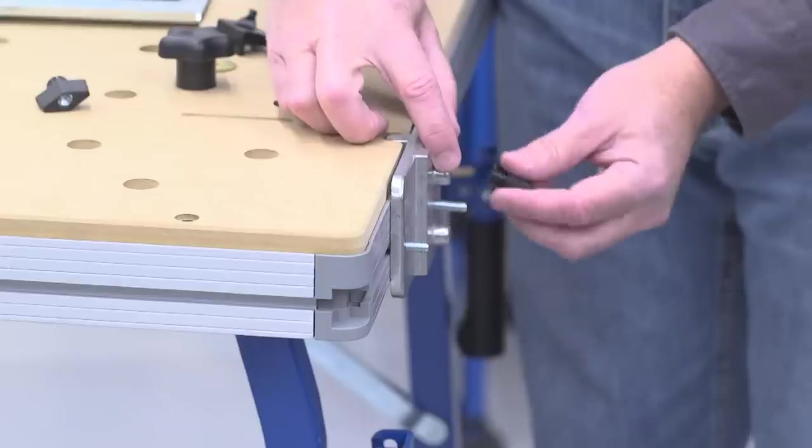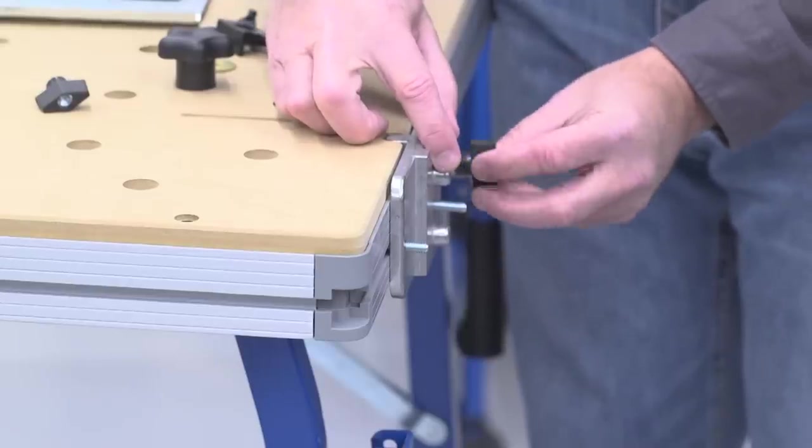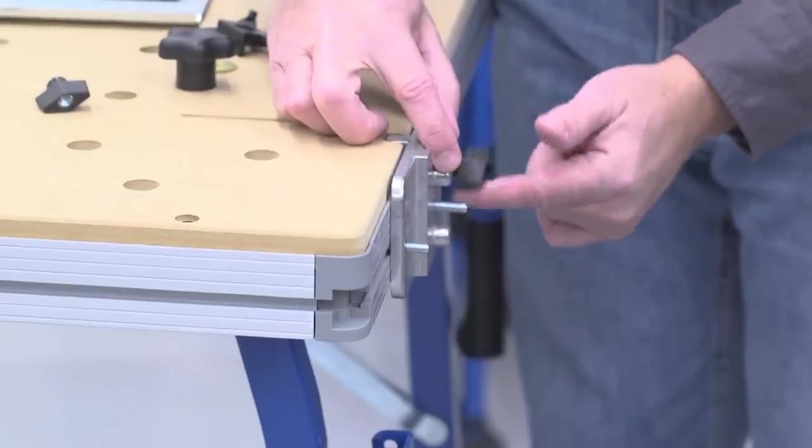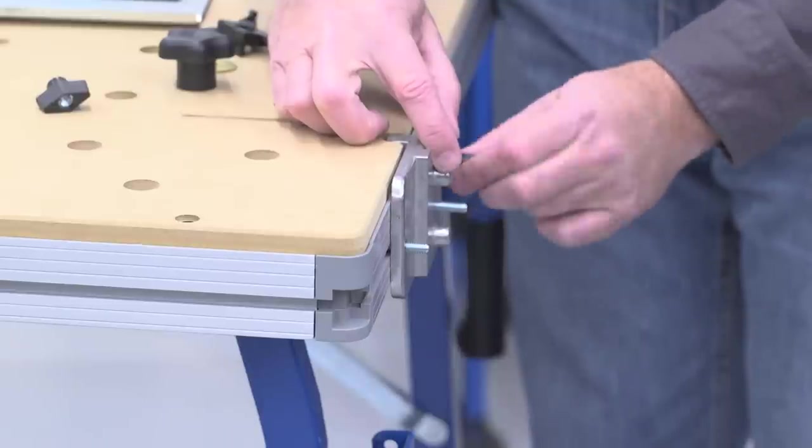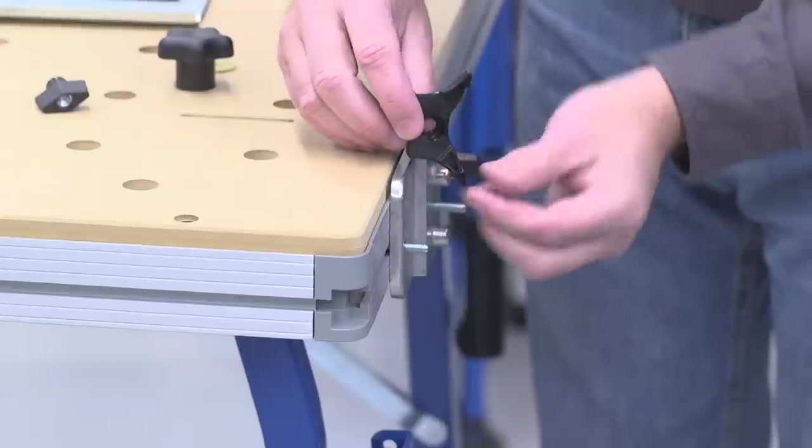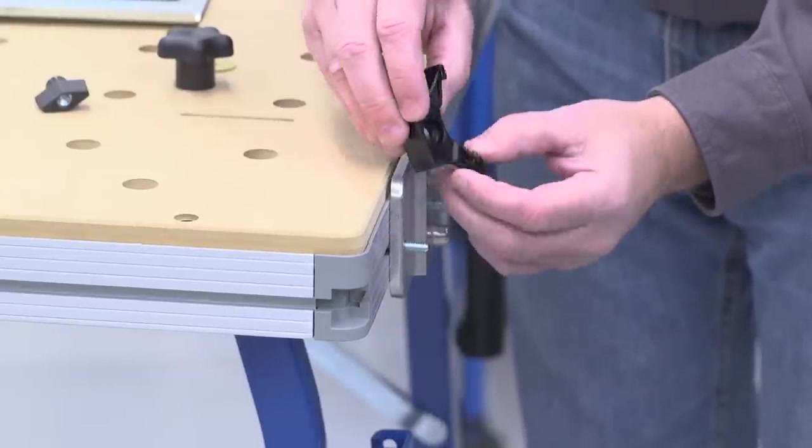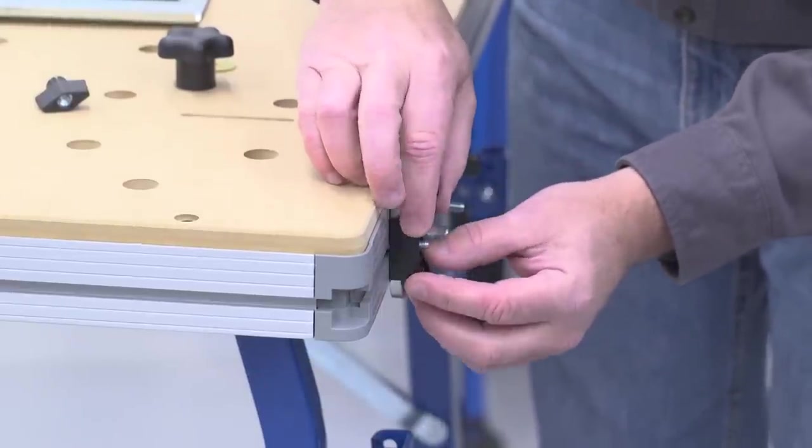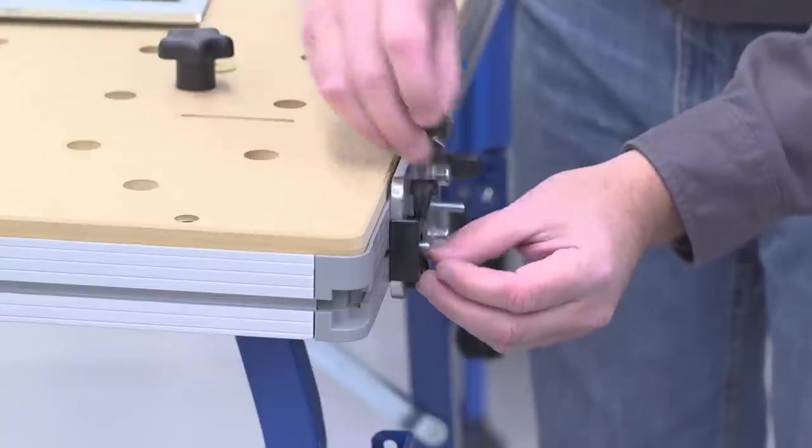For now, slide the mounting plate toward the center of the table, and then install one of the T knobs on the inner bolt. You don't need to tighten it completely. On the outer bolt, slip on one of these hinge support brackets. Then, add the T bolt.